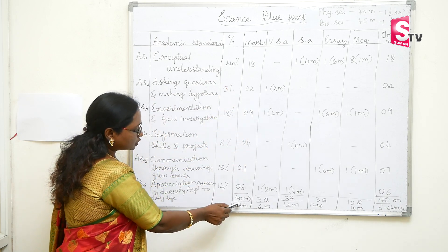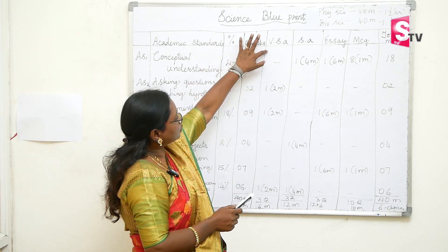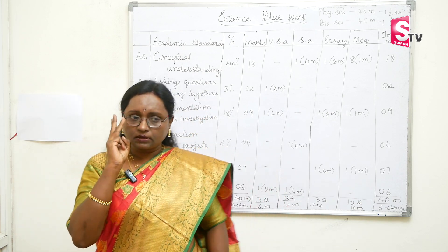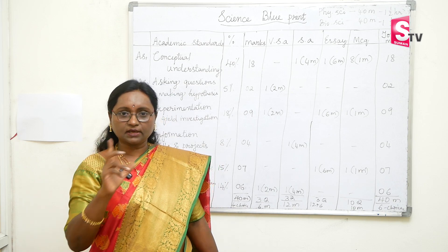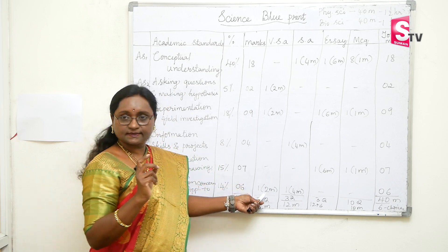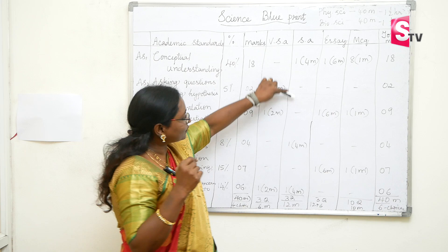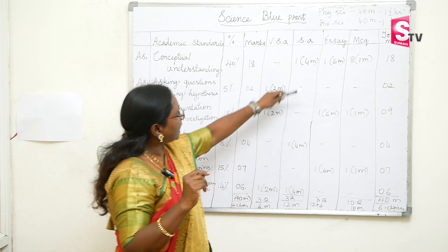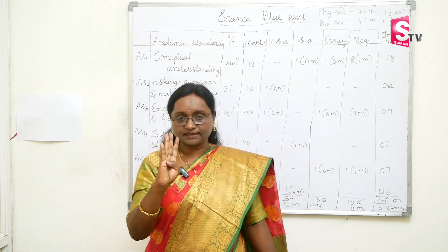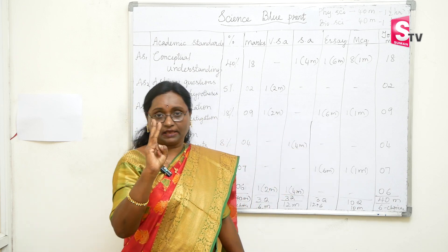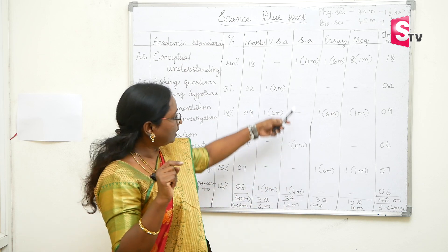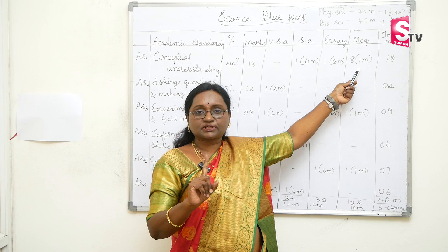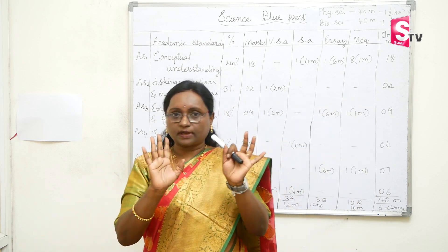Looking at the overall question paper: in very short questions you will get 3 questions and all 3 must be answered, each carrying 2 marks. The short question answer section gives 3 questions each carrying 4 marks. For essay questions, 4 questions will be given and you have to attempt 3, giving you 1 choice. Multiple choice questions total 10 marks. That completes Part B of the paper.